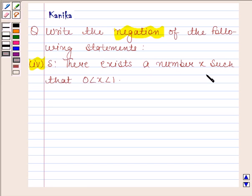First statement is there exists a number x such that 0 is less than x is less than 1.